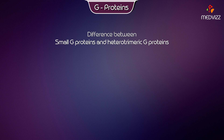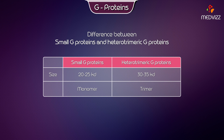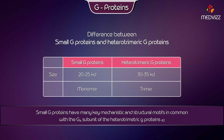Comparing Small G-Proteins and Heterotrimeric G-Proteins: the size of Small G-Proteins is 20–25 kD, while that of Heterotrimeric G-Proteins is 30–35 kD. Small G-Proteins are monomers, whereas Heterotrimeric G-Proteins are trimers.